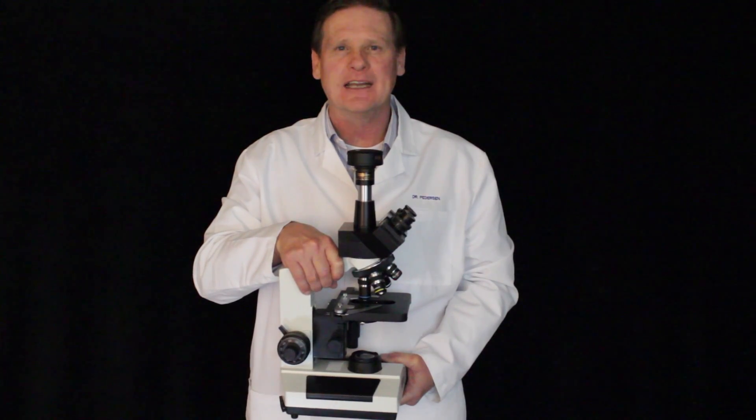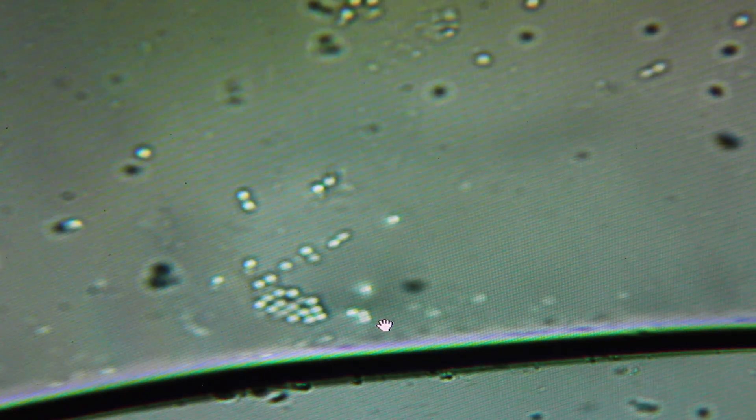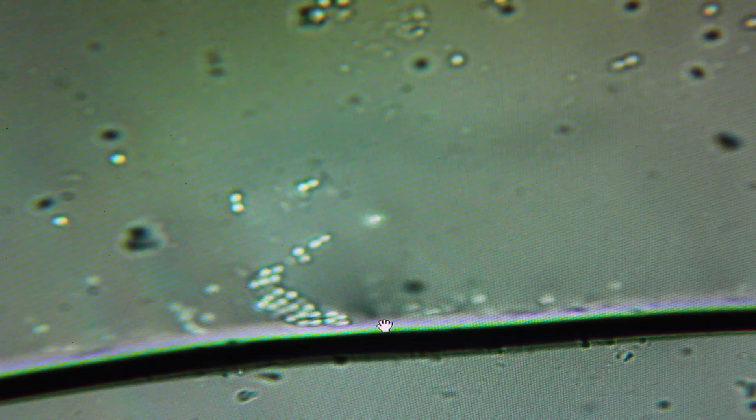It happens very quickly. Here it is. What you're looking at here is bacteria as it approaches a silver line. The black line is silver moving across the slide.